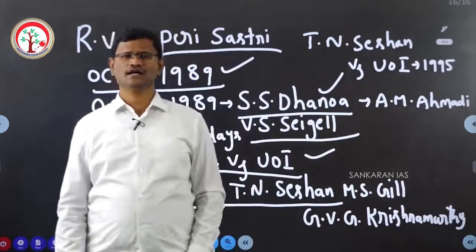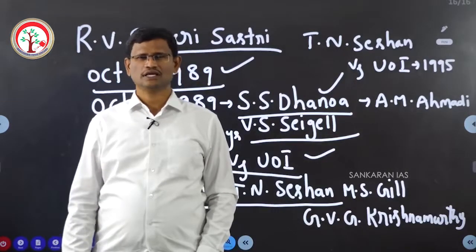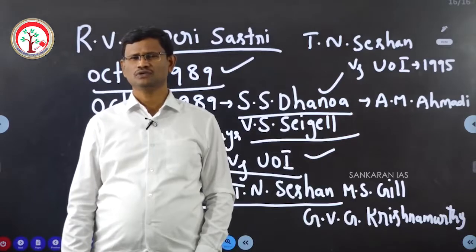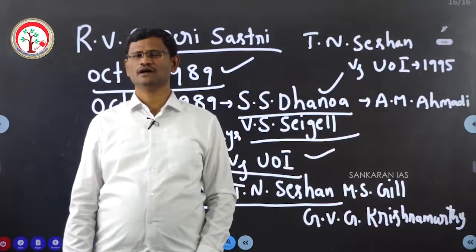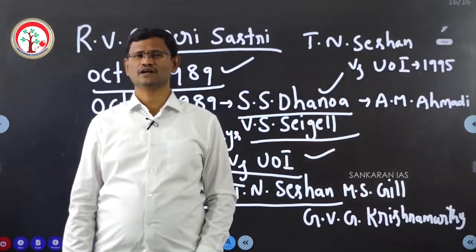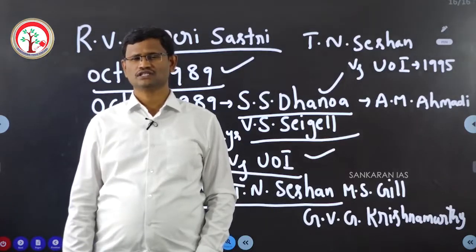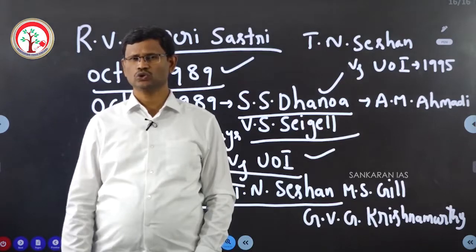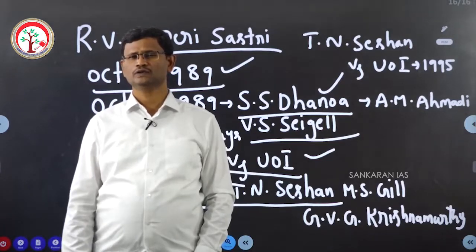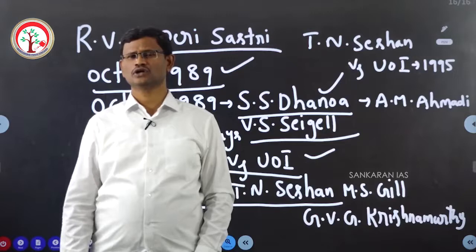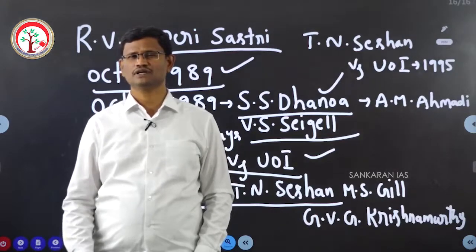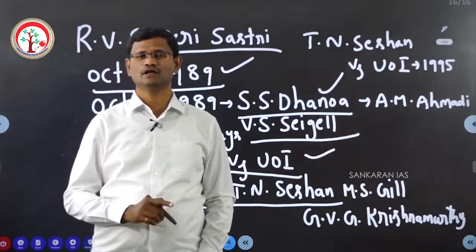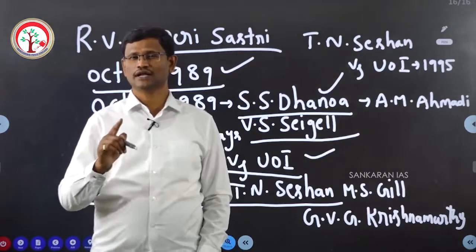T.N. Seshan had differences with the then Prime Minister P.V. Narasimha Rao. P.V. Narasimha Rao was worried about the independent and unilateral behavior on the part of the then Chief Election Commissioner T.N. Seshan. Again, through an ordinance, the single-member Election Commission of India was made a multi-member body on October 2nd 1993.